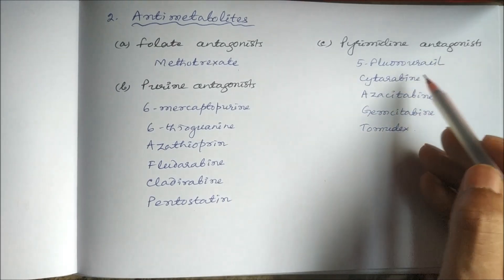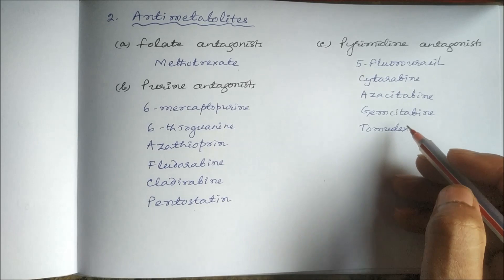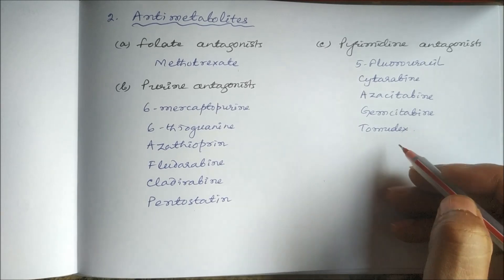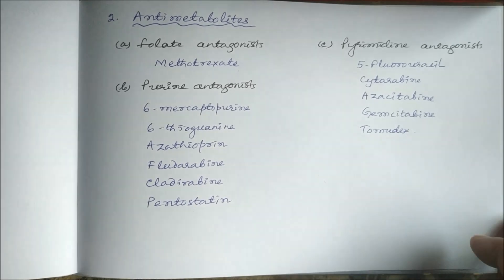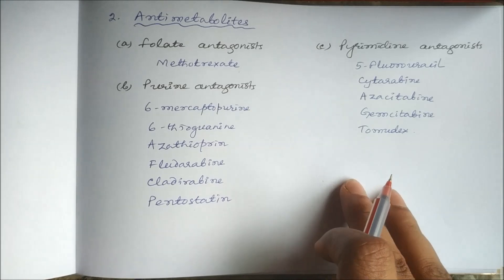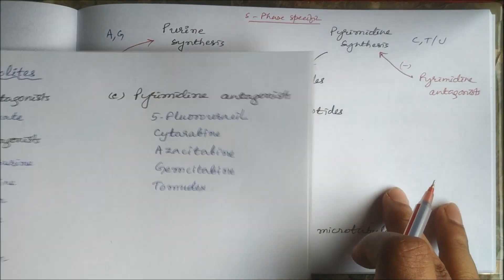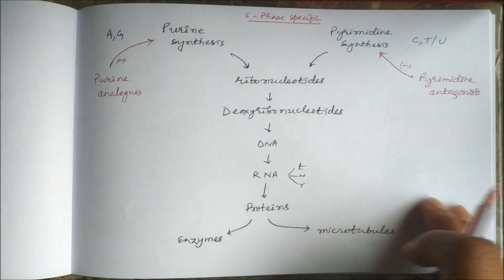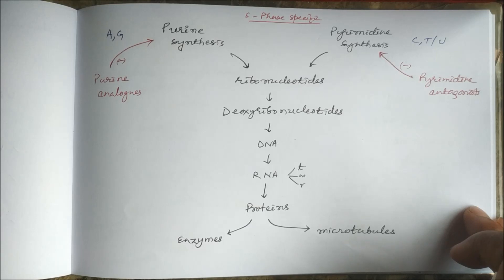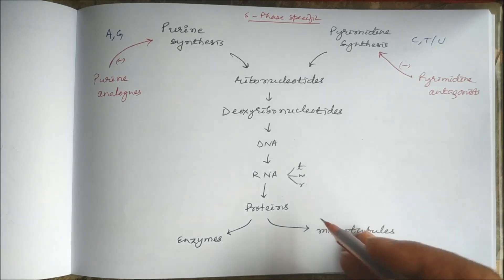Pyrimidine antagonists include 5-fluorouracil, cytarabine, azacitidine, gemcitabine, and tomudex. These anti-metabolites inhibit DNA synthesis and hence cause inhibition of protein synthesis, including enzymes and microtubules.